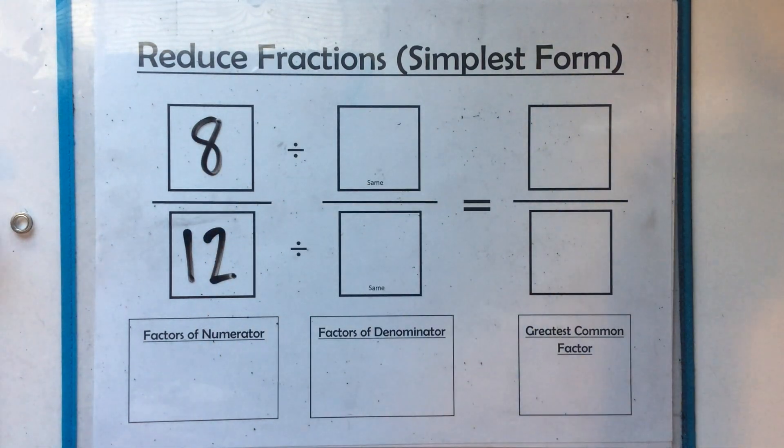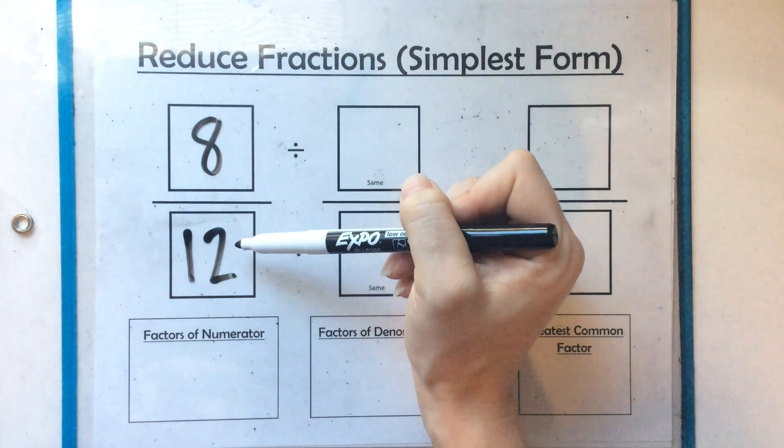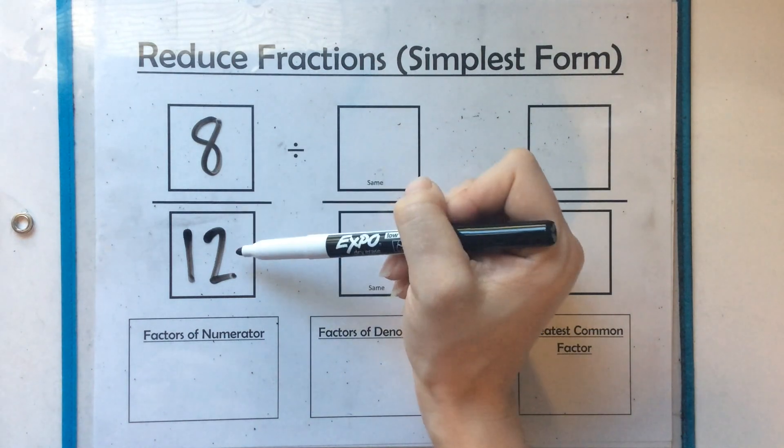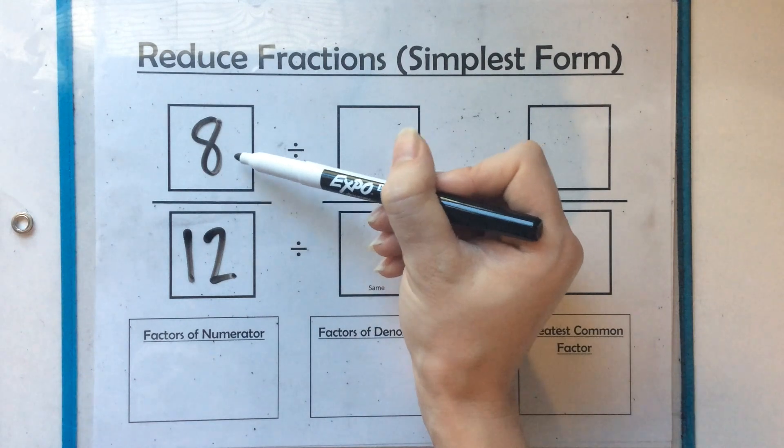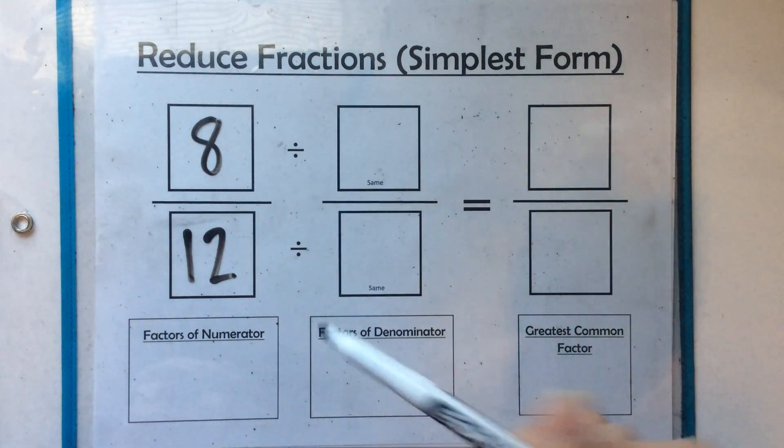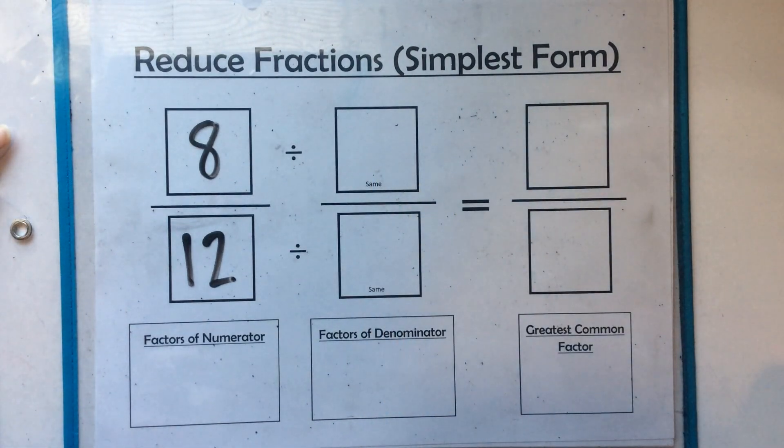So what we want to think about is, can 8 be divided into 12? And if our answer is no, we cannot divide it by 8. So 8 cannot be divided into 12, so we cannot reduce this fraction by dividing by 8. Both of these numbers are even numbers, so we can divide by 2.